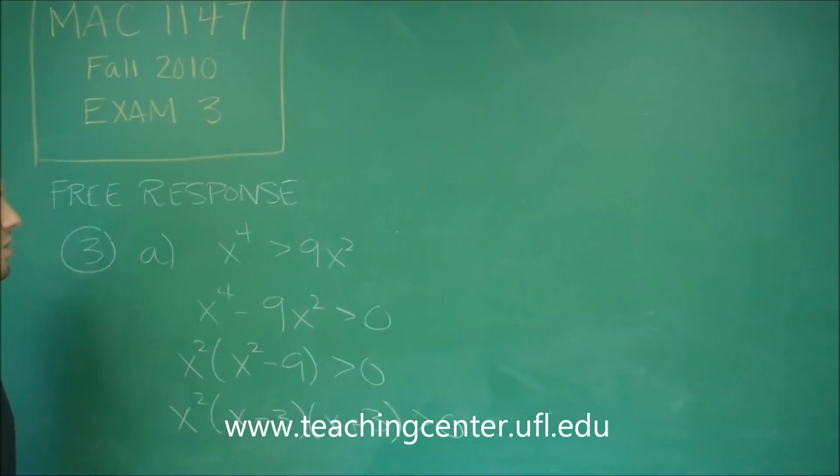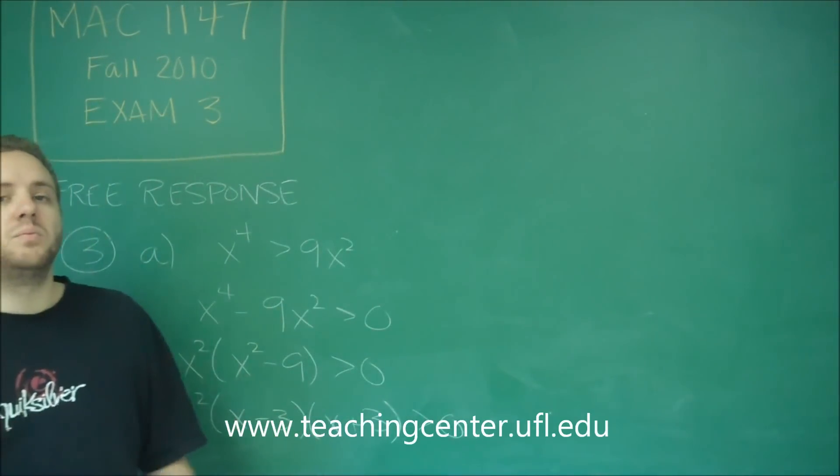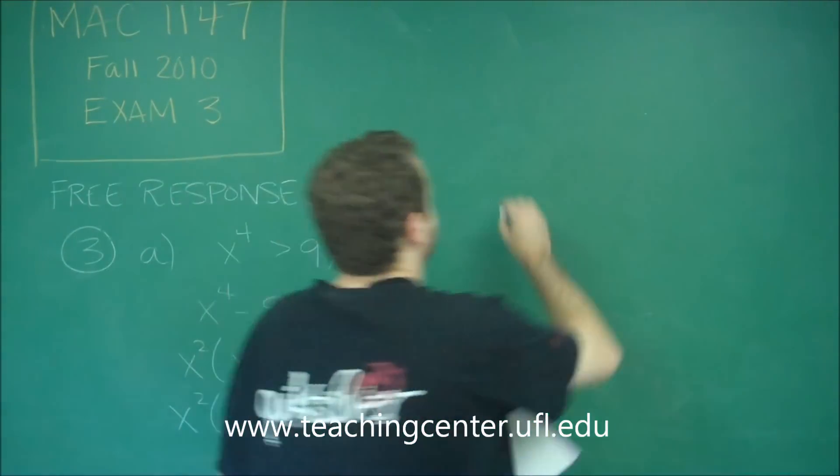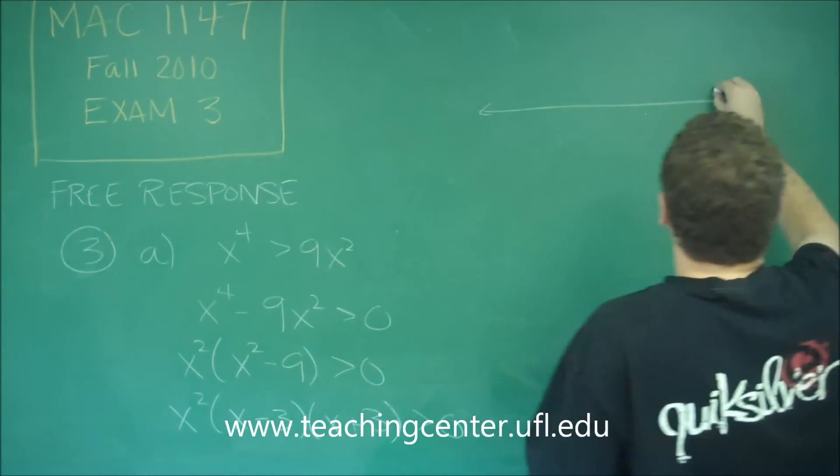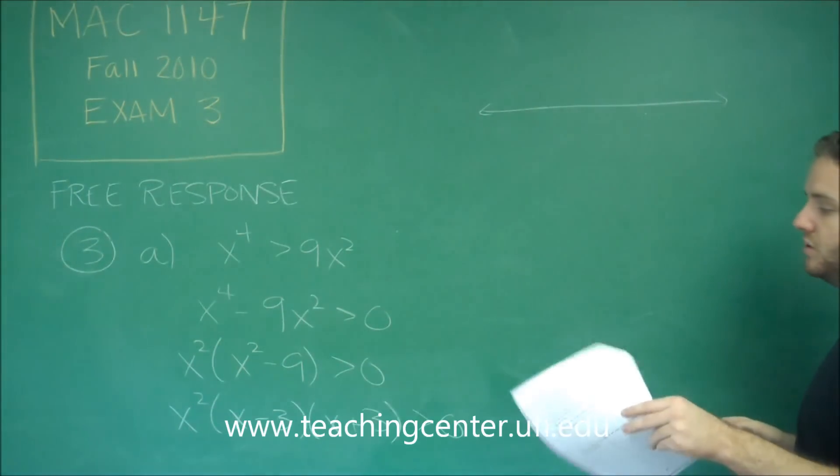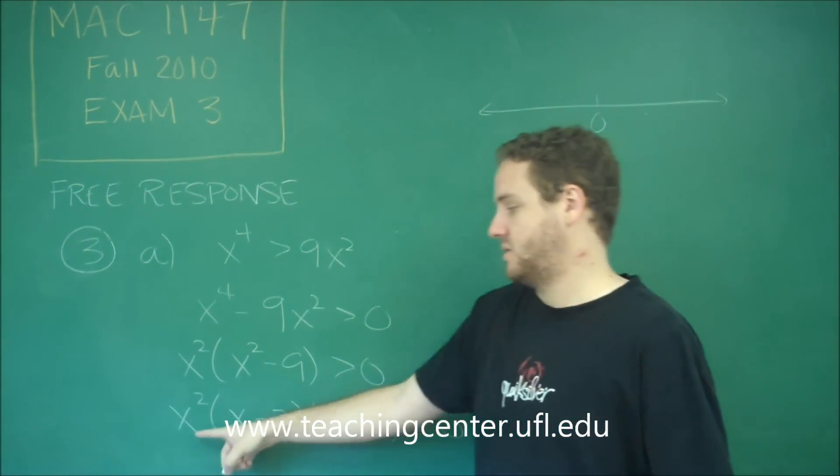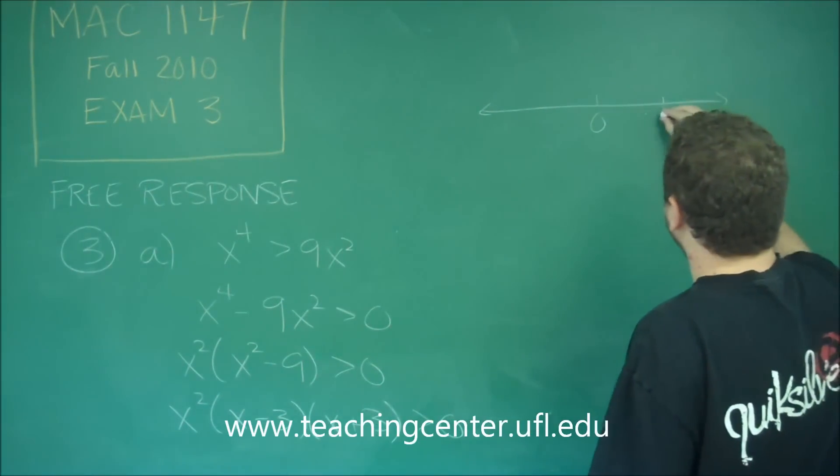And now we have a fully factored polynomial, we have 0, so this should be the step where you go to the number line. So we want to put all of our numbers that could possibly be 0 on there. We have 0 from this x squared. We have 3 and we have negative 3.